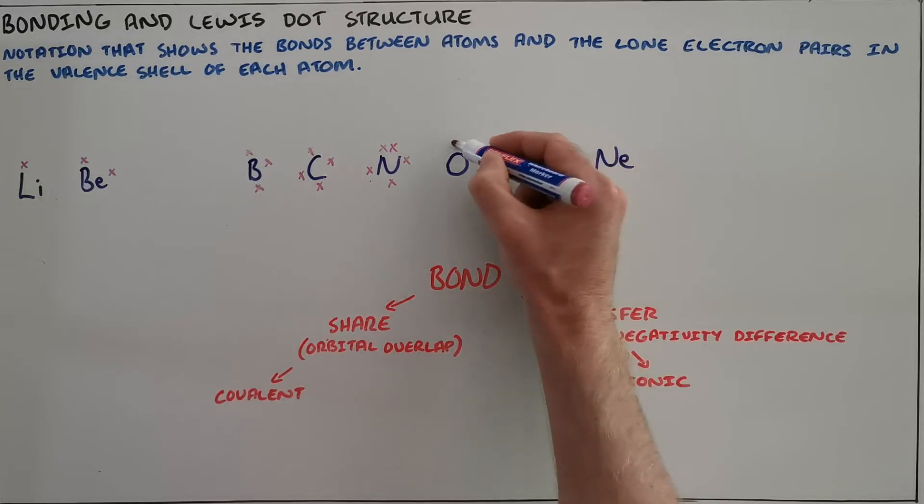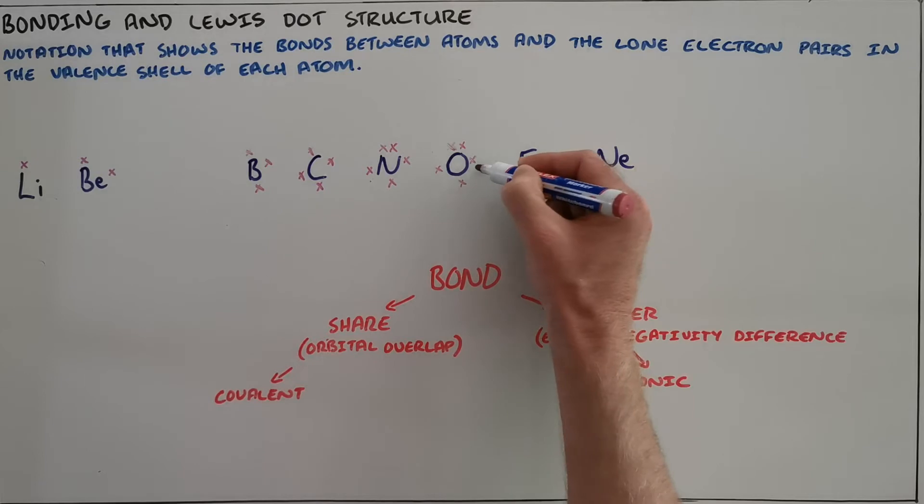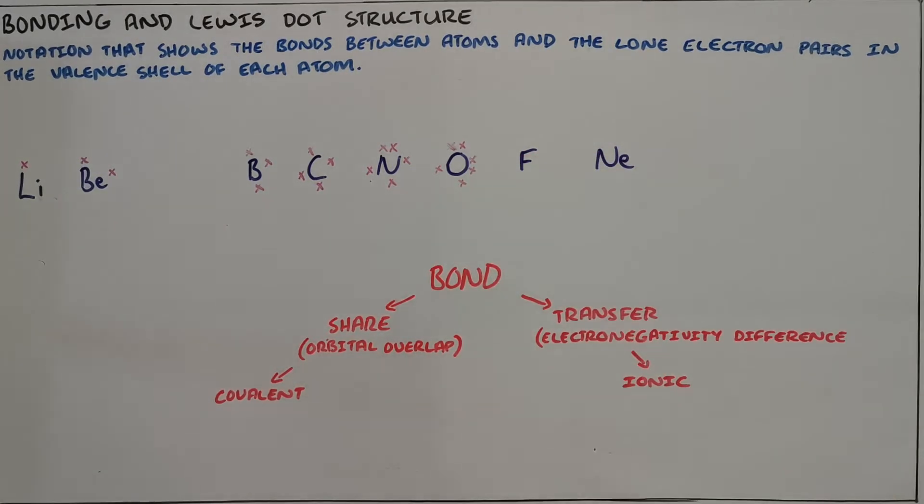We complete this process where we see that oxygen, being in group 16, has six valence electrons and we can see it would be indicated like that.